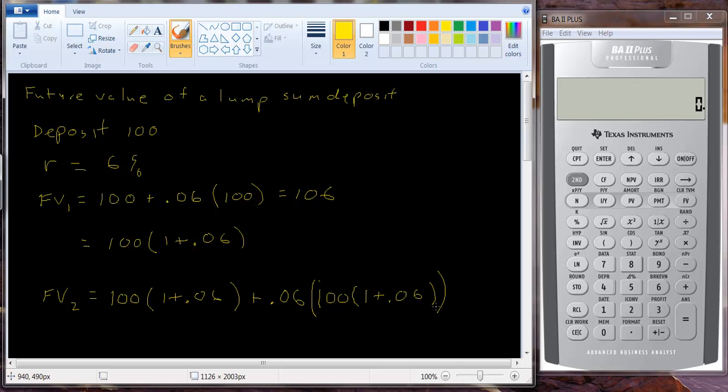Alright so let's see what we can do here. We can factor this term out. We have both terms have these two things in it. So I get one hundred times one plus point oh six. Both terms have that. Times one because that's all that's here.